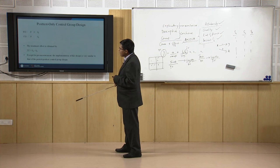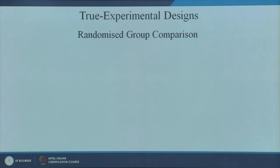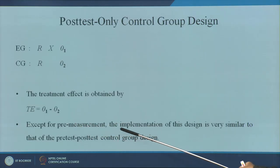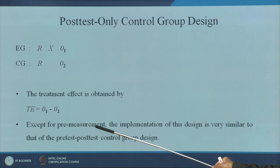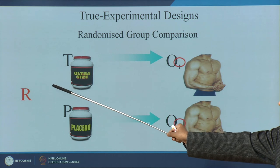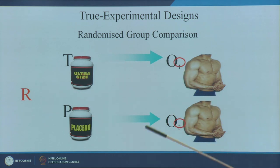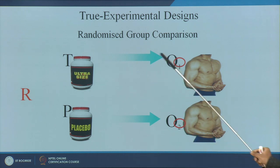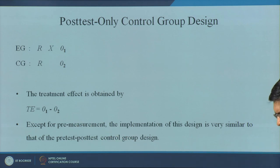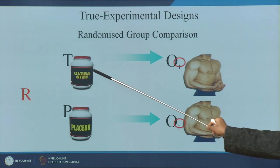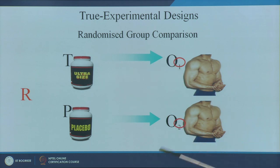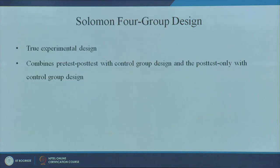Post-test only design: except for the pre-measurement, other things remain the same as the previous design. There is no pre-measurement here, but random assignment is still present. You can decide to which group the treatment goes and which is the control. The difference O1 minus O2 gives your desired result. This is again a true experimental design.